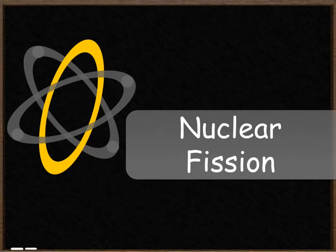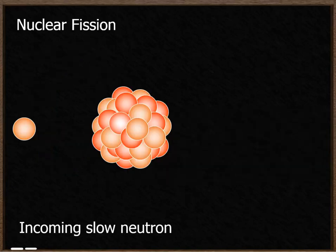In this video we're going to look at the process of nuclear fission. During this process you start with quite a large, heavy, unstable isotope, for example uranium.